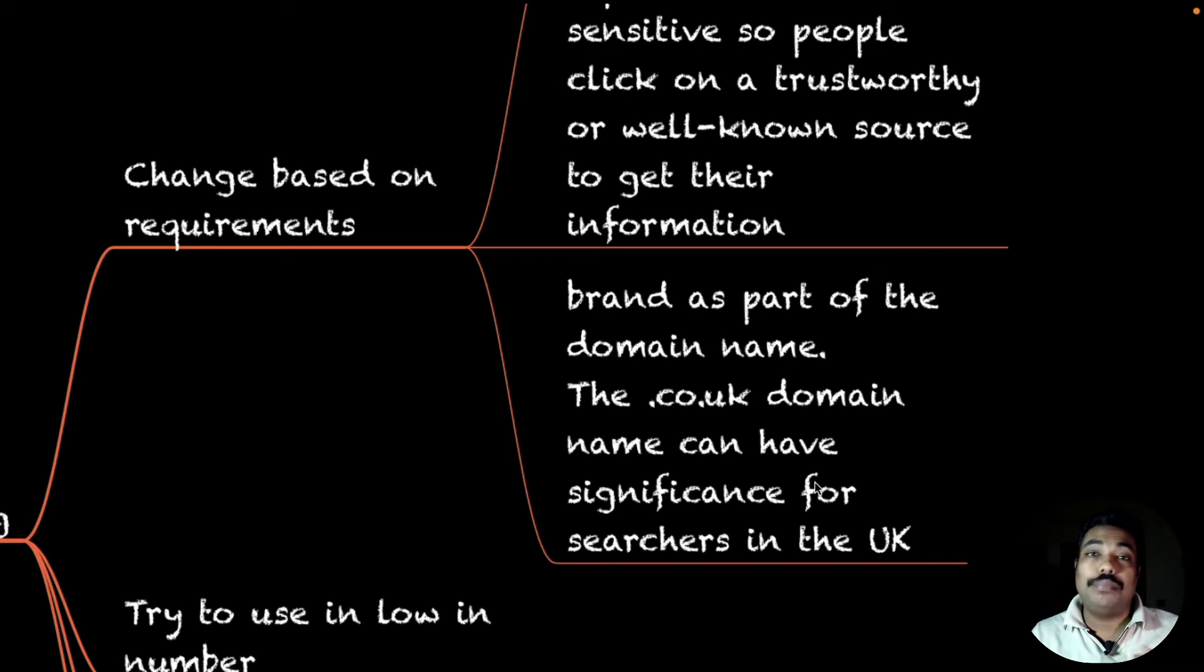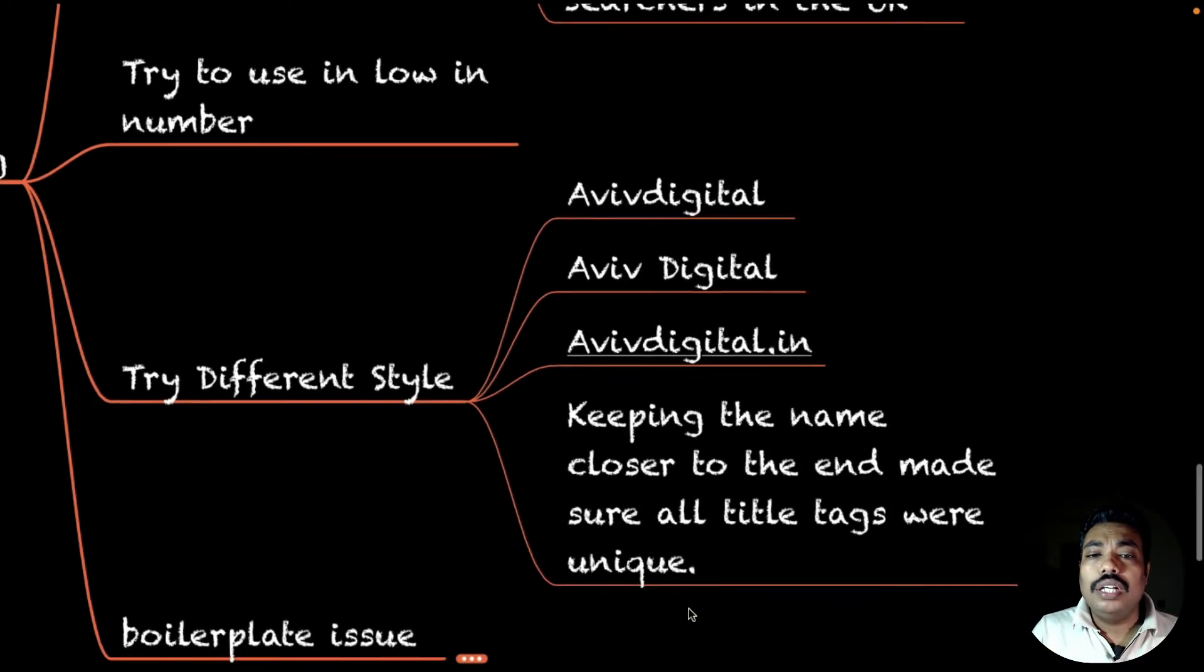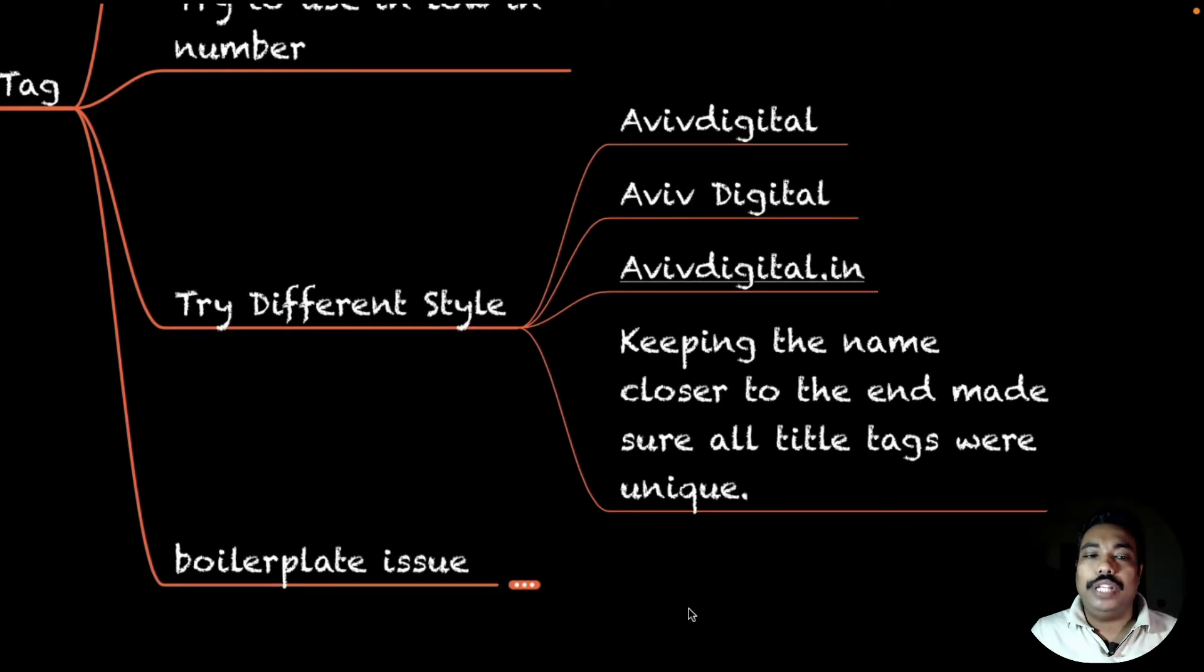In my opinion, try to use it as relevant. If your users need it, try to use less and use keywords instead. If you are using brand names, always make sure to try different styles. Don't go with one single concept - try Aviv Digital, Aviv space Digital, AvivDigital.in as a domain name. Keep the name closer to the end, and make sure all title tags are unique. That will be very appropriate.